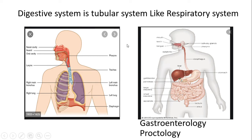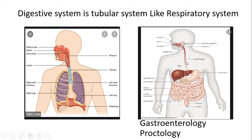Looking at these two figures, the first figure shows our respiratory system with the nasal cavity, nostrils, larynx, trachea, left and right lungs, and the diaphragm. Our digestive system is a tubular system, similar to the respiratory system. It consists of tubes running from our mouth to the esophagus, to the small intestine, to the large intestine, and to the anus. The study of the structures and functions of these tubular structures of the alimentary canal is called gastrointestinal physiology.